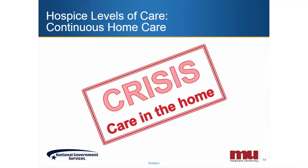Continuous home care is a level of care provided during a period of crisis that the beneficiary is experiencing and is necessary to maintain the beneficiary at home. As with routine home care, it would be appropriate to bill a RHC level of care when the beneficiary resides in a nursing facility or skilled nursing facility. However, since CHC is a level of care provided to maintain the beneficiary in their home — meaning their personal residence — it would not be appropriate to bill for CHC in a facility even though the facility is considered their home.